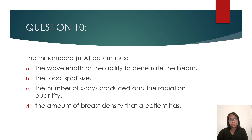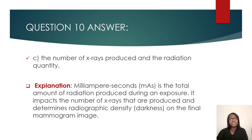Question ten: the milliampere (mA) determines what — the wavelength/penetrating power, the focal spot size, the number of x-rays produced and radiation quantity, or the amount of breast density? The answer is the number of x-rays produced and radiation quantity. mAs is the total amount of radiation produced during an exposure; it determines radiographic density, or the darkness on the final mammogram image.